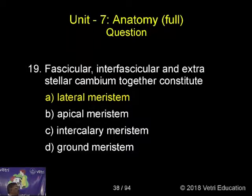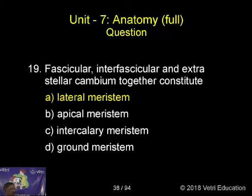Fascicular, interfascicular and extrastelar cambium together constitute: A. Lateral meristem, B. Apical meristem, C. Intercalary meristem, D. Ground meristem. The correct answer is A. Lateral meristem.